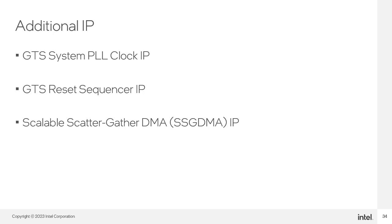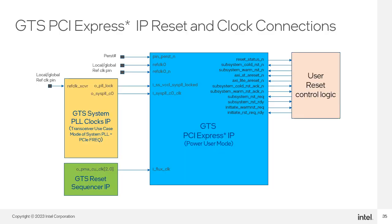Before we end our look at the GTS PCI Express IP, we also need to be aware of some additional IP either needed or useful in building a functioning system. These are: the GTS System PLL Clock IP, the GTS Reset Sequencer IP, and the Scalable Scatter-Gather DMA, or SSG-DMA IP. Creating a design using the GTS PCI Express IP requires the use of two additional IP: the GTS System PLL Clocks IP and the GTS Reset Sequencer IP, shown in the diagram on this slide along with the signal connections to the PCIe IP.